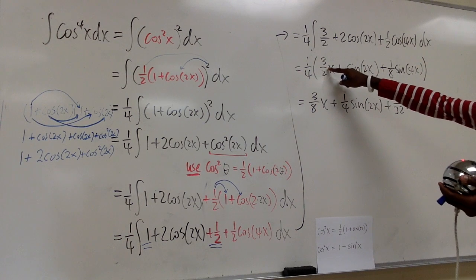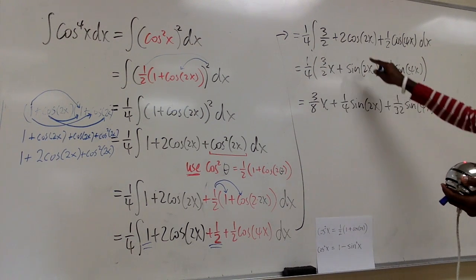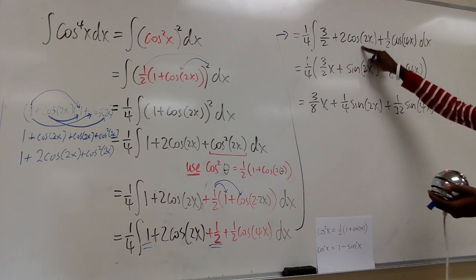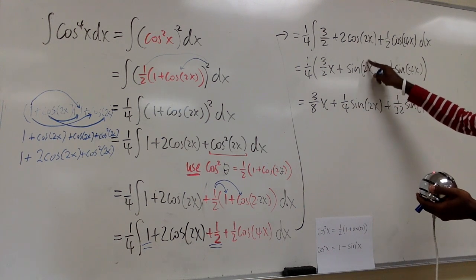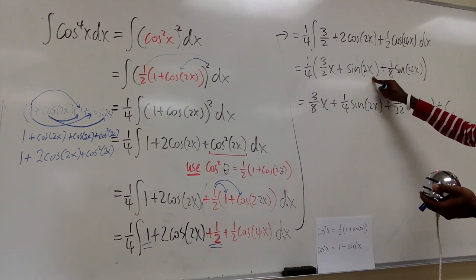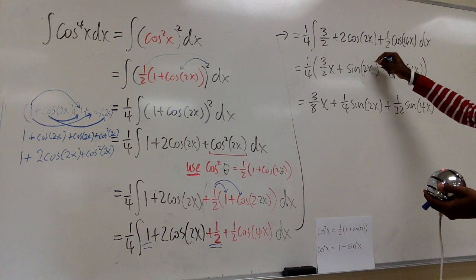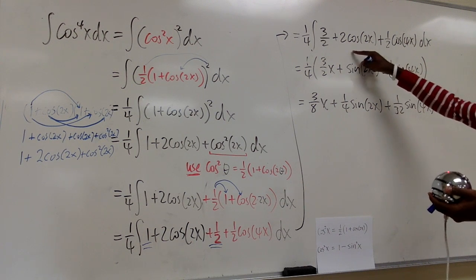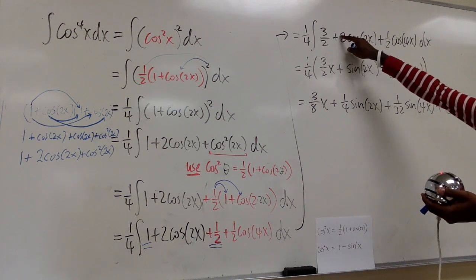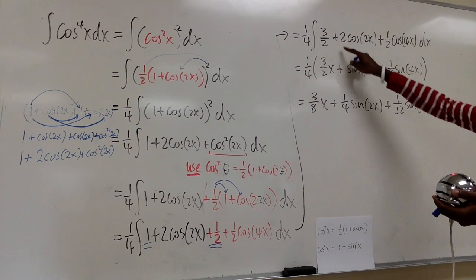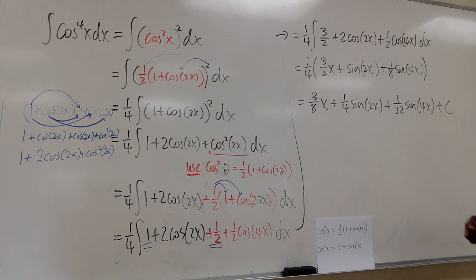The integral of 3/2 in terms of x is (3/2)x. The integral of cosine(2x) is positive sine(2x), but using the reverse chain rule we divide by 2, and that 2 cancels with the existing 2, giving us positive 1·sine(2x).